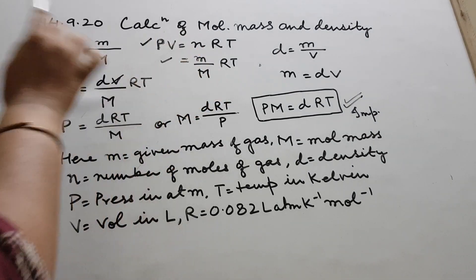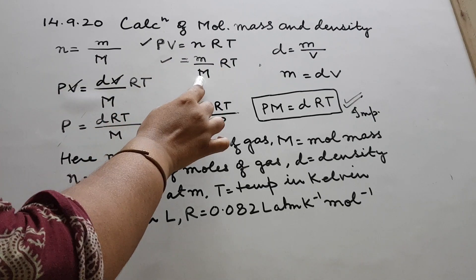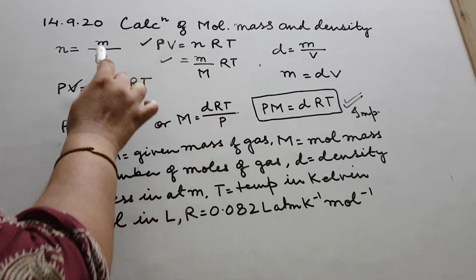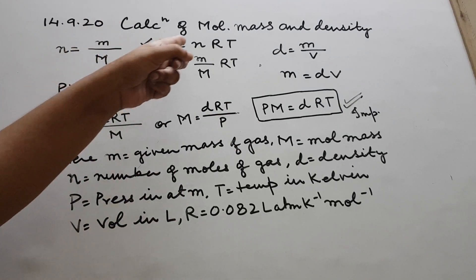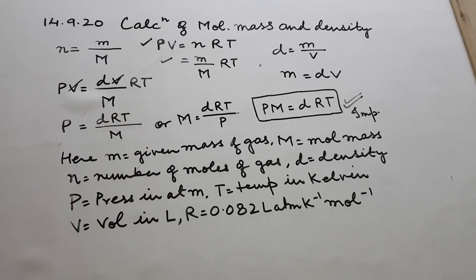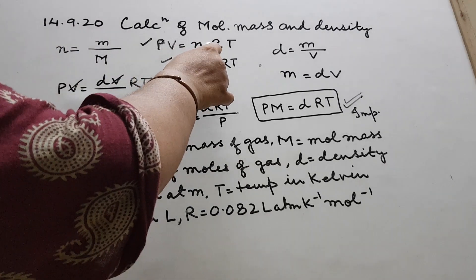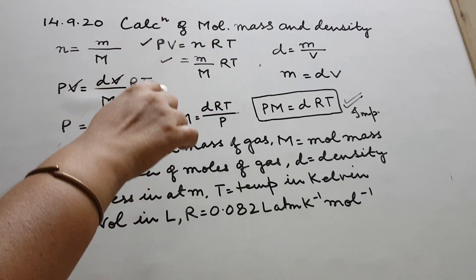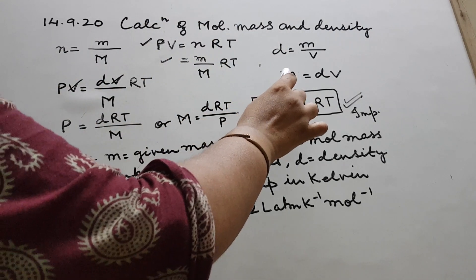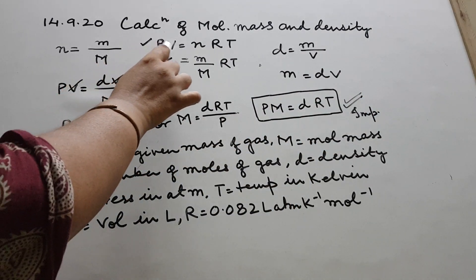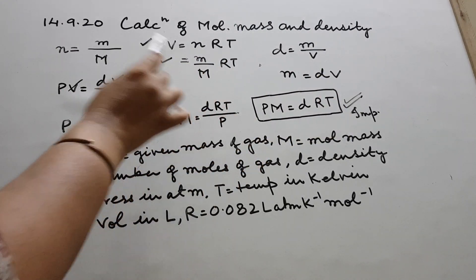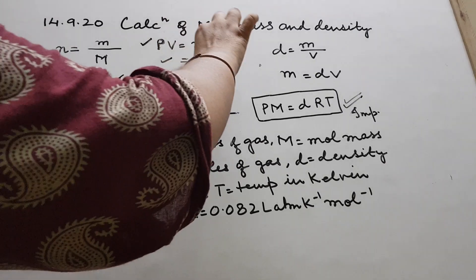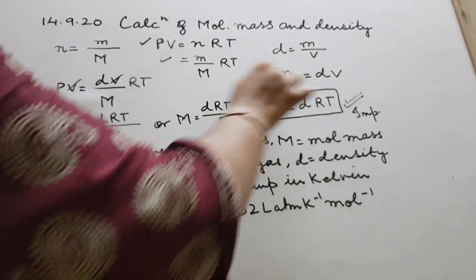We have seen that n = m/M. So in place of n in the ideal gas equation PV = nRT, I wrote small m upon capital M. Now I am writing this equation in a different manner — in place of this m, I am writing dV. So PV = (dV / M) × RT.